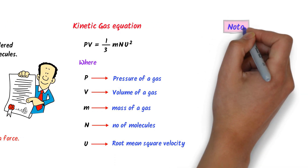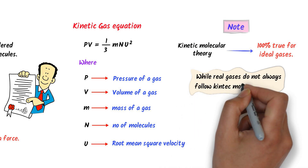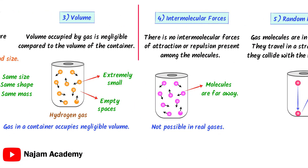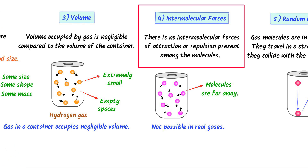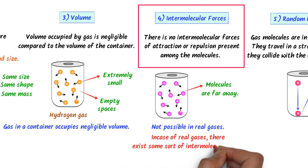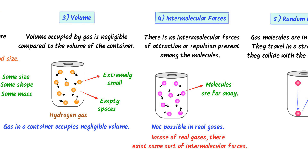Finally, remember that the Kinetic Molecular Theory of Gases is 100% true for ideal gases, while real gases do not always follow the assumptions of the kinetic molecular theory. For example, the theory states there are no intermolecular forces present among molecules, but in real gases there exist weak intermolecular forces among gas molecules. In the next lecture, we will derive the kinetic gas equation.